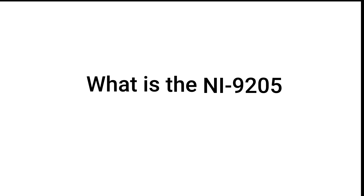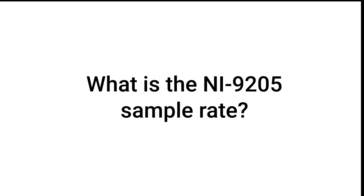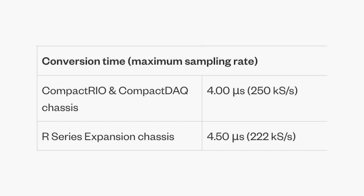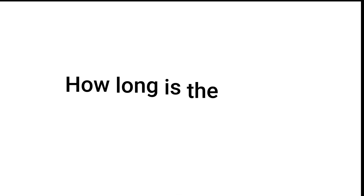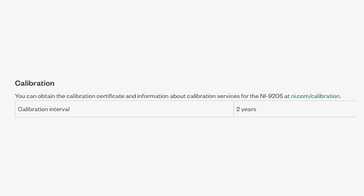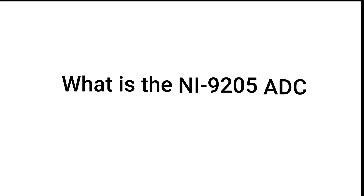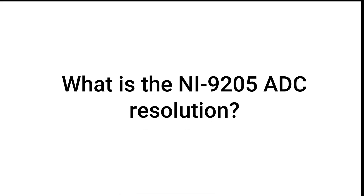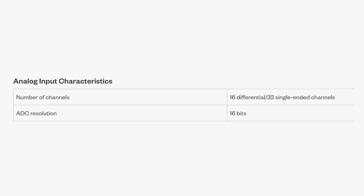What is the NI9205 sample rate? The NI9205 sample rate is 250 kS per second. How long is the NI9205 calibration interval? The NI9205 calibration interval is 2 years. What is the NI9205 DC resolution? The NI9205 DC resolution is 16 bits.